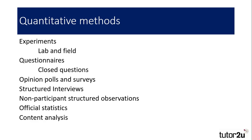Questionnaires are another method that produce quantitative data. If the questions have been pre-coded and have a finite number of responses, or closed questions, responses can easily be analysed and trends and patterns organised into charts, tables and graphs. The same is true of opinion polls and other surveys that can assess an individual's intended or past behaviours, and these can be collated and represented through percentages in charts and diagrams. Non-participant observations can also be used in a structured manner to observe the frequency of behaviours over a period of time, which produces quantitative data.